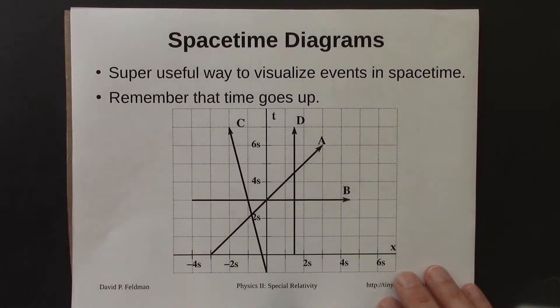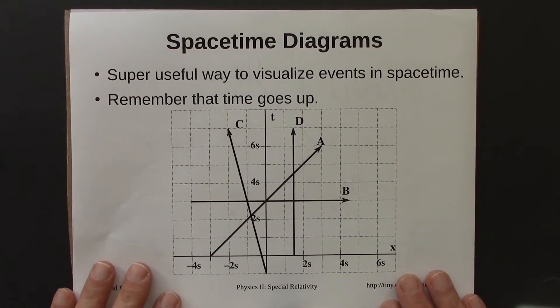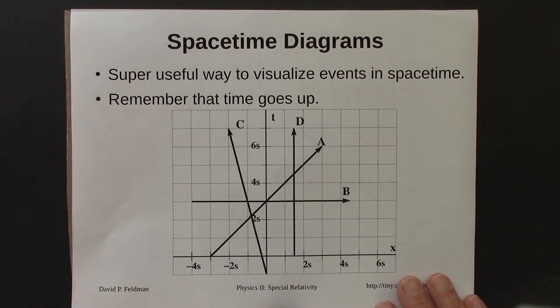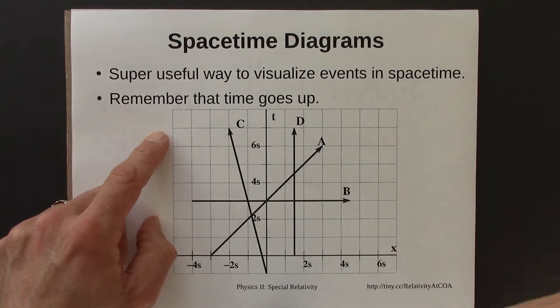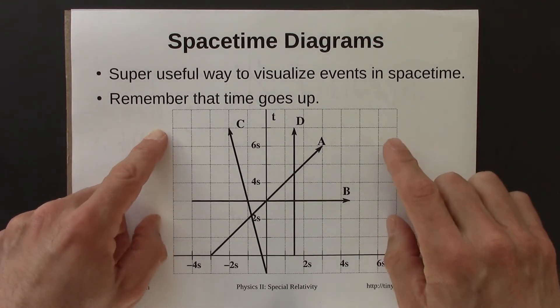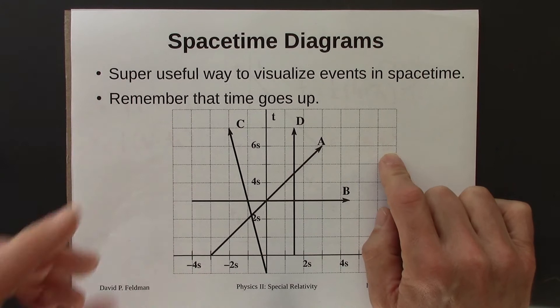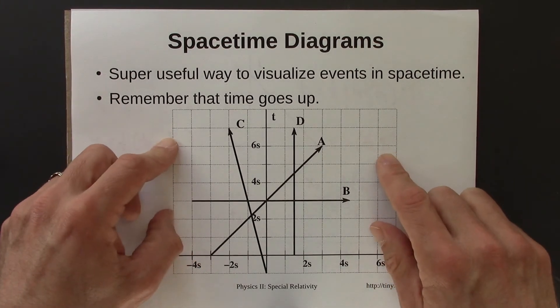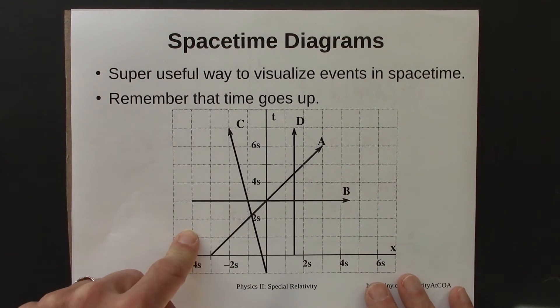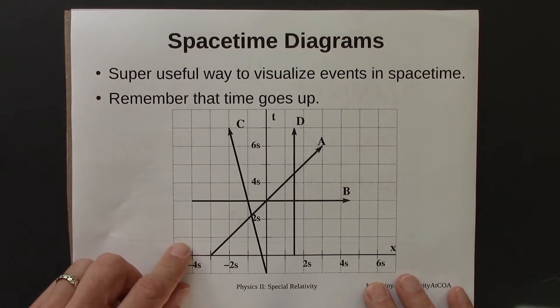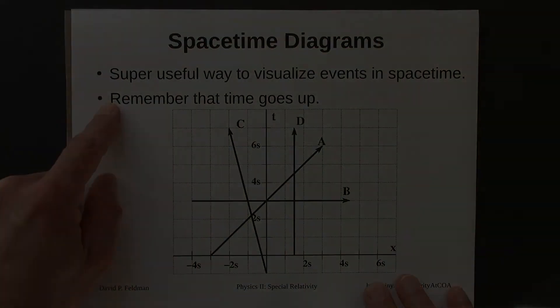Lastly, an important thing we introduced in this unit were space-time diagrams. These are really useful ways to visualize what's going on in special relativity, and we'll use them in pretty much every unit from here on out. Here's the example we worked through — you'll work through some for homework. A key thing to remember is that it's just like an x-versus-t graph, except the t-axis goes up instead of to the side.